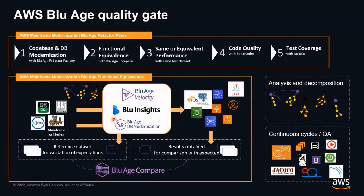The code base is going to be modernized as a vertical holistic stack, including the database, meaning we are going to modernize any kind of persistency from the legacy platform. Whatever the format — whether it's a relational database like DB2, a VSAM file, or anything else — it's going to end up in a relational schema.